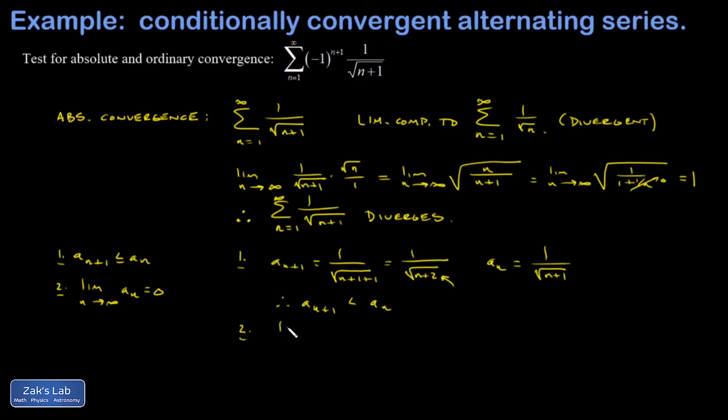Number 2, the limit as n goes to infinity of 1 over root n plus 1. This one, you can just go straight to the answer. The denominator is becoming infinite. The numerator stays at 1. And so this goes to 0. And so we have number 1 and number 2 proven.